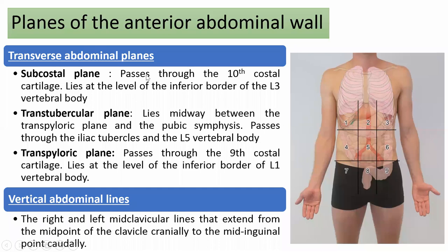The planes of the anterior abdominal wall include transverse and vertical abdominal lines. The subcostal plane passes through the 10th costal cartilage at the level of the inferior border of L3. The trans-tubercular plane lies midway between the transpyloric plane and the pubic symphysis, passing through the iliac tubercles and L5. The transpyloric plane passes through the 9th costal cartilage at the level of L1. Vertical lines are the right and left mid-clavicular lines, extending from the midpoint of the clavicle to the mid-inguinal point.